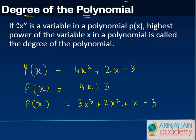Now in all these cases if you see there is a variable x. If x is a variable in a polynomial p(x), everywhere we have x, we don't know what the value of x is. The highest power of the variable x in a polynomial is called the degree of polynomial.